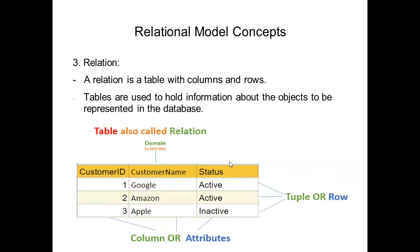The next concept is relation. Relation is nothing but the table — it is the word used in the relational model. A relation is the collection of rows and columns, and those tables are used to hold information about the objects to be represented in the database. Here I have given customer information, and the name of this table is customer, so the name of the relation is customer because all the information relates to customers.